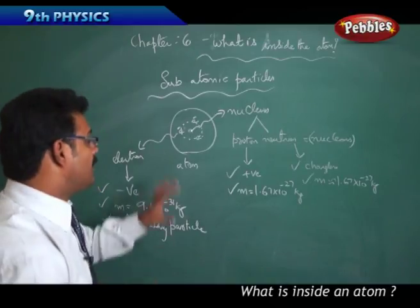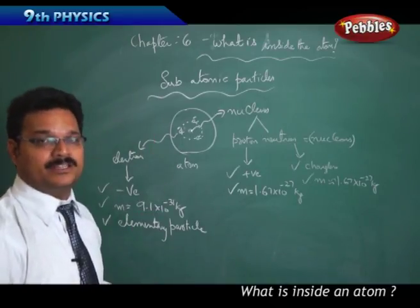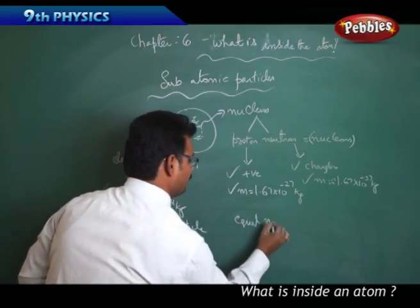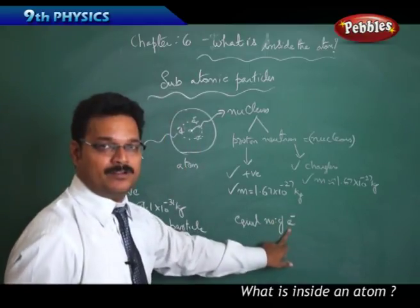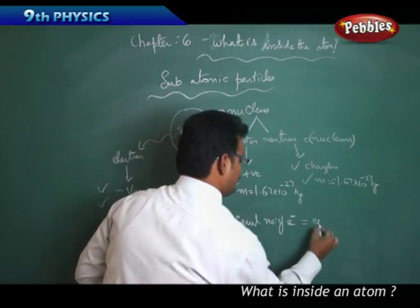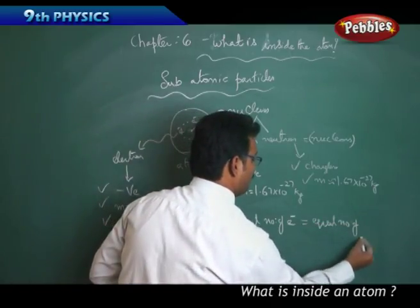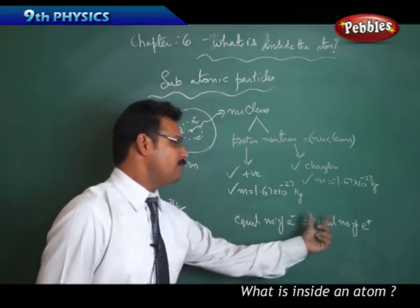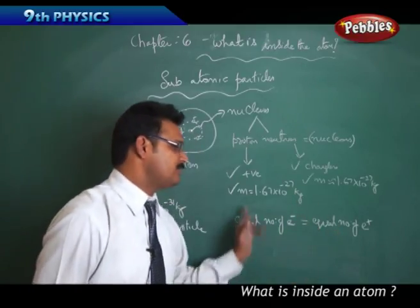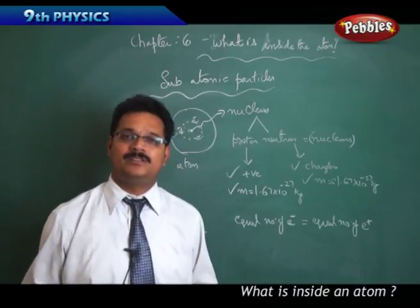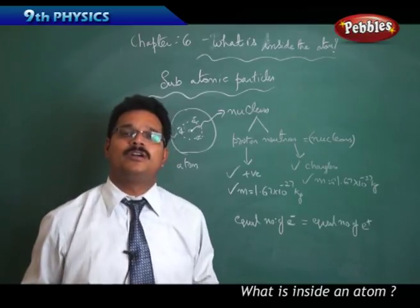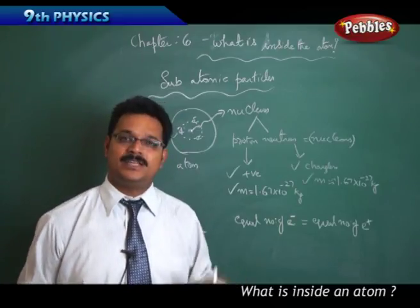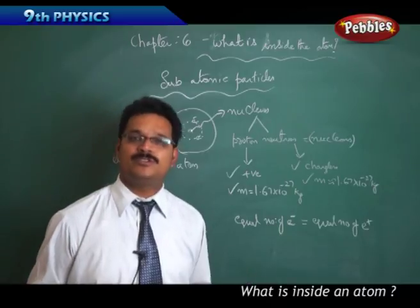Later they also understood that atom is neutral, consistent with Dalton's theory. The atom has equal numbers of electrons (negative charge) and protons (positive charge), so the total charge is zero. Our human body is also neutral — that's why we don't feel electric shock. Every atom in our body has equal numbers of negative and positive charges, making the total charge zero.